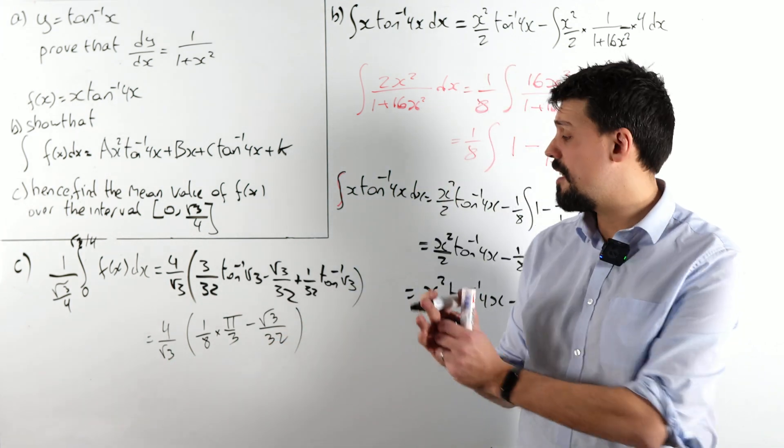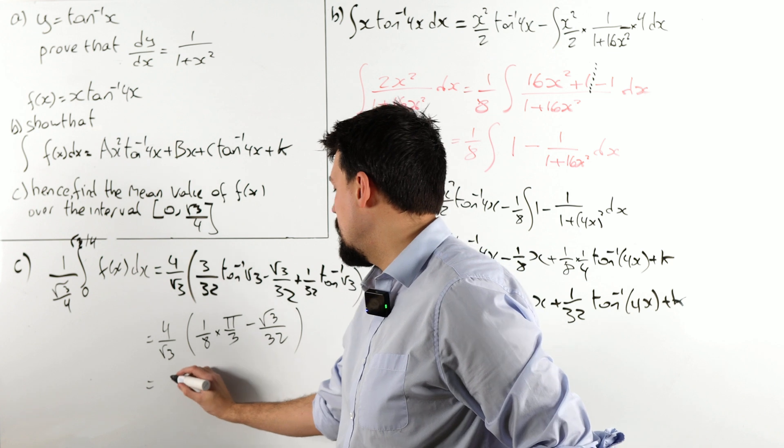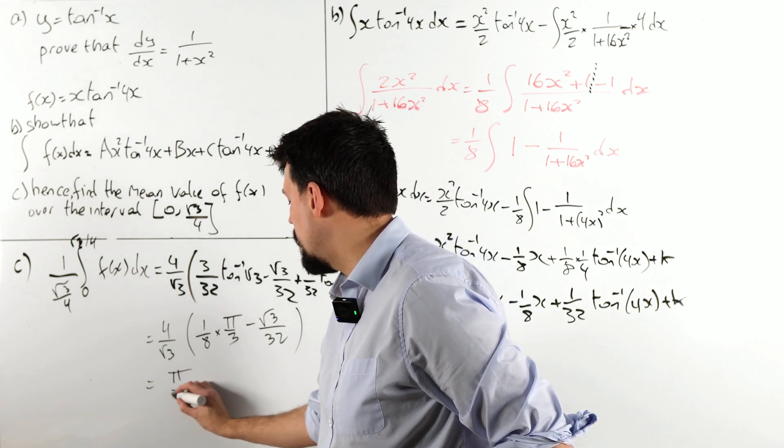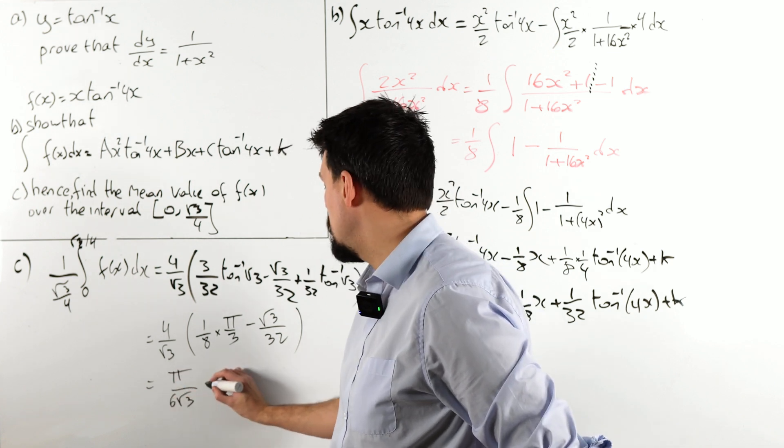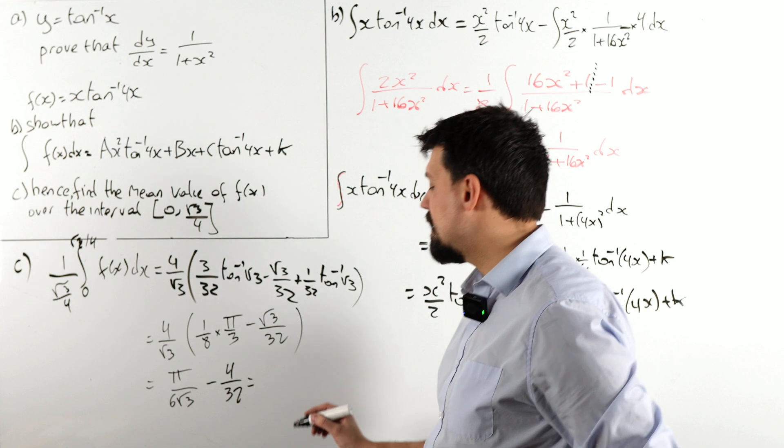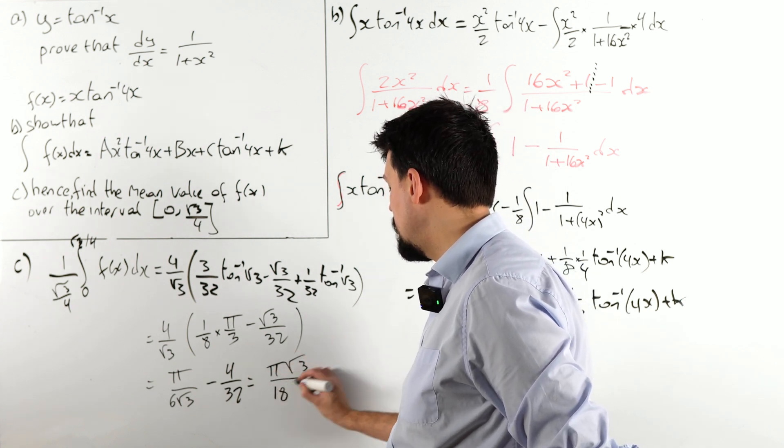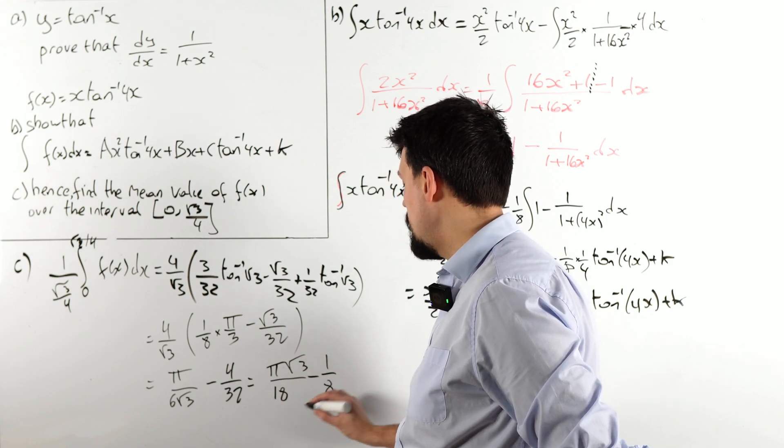And now we just need to tidy this up a little bit. So I end up with pi over 6 root 3, and I end up with 4 over 32, and I can tidy that up. That is pi root 3 over 18 minus 1 eighth.